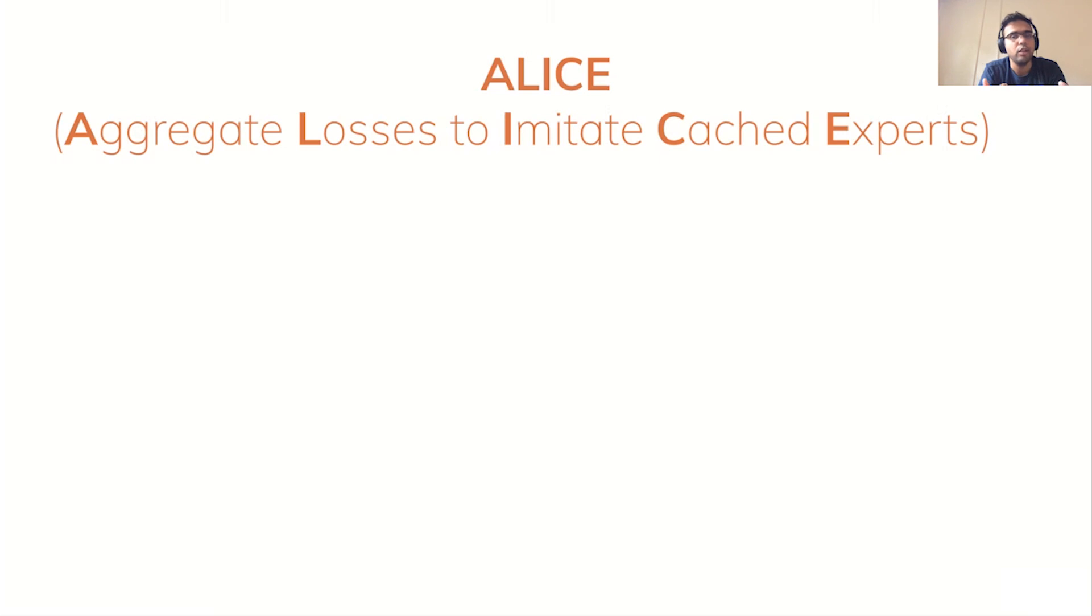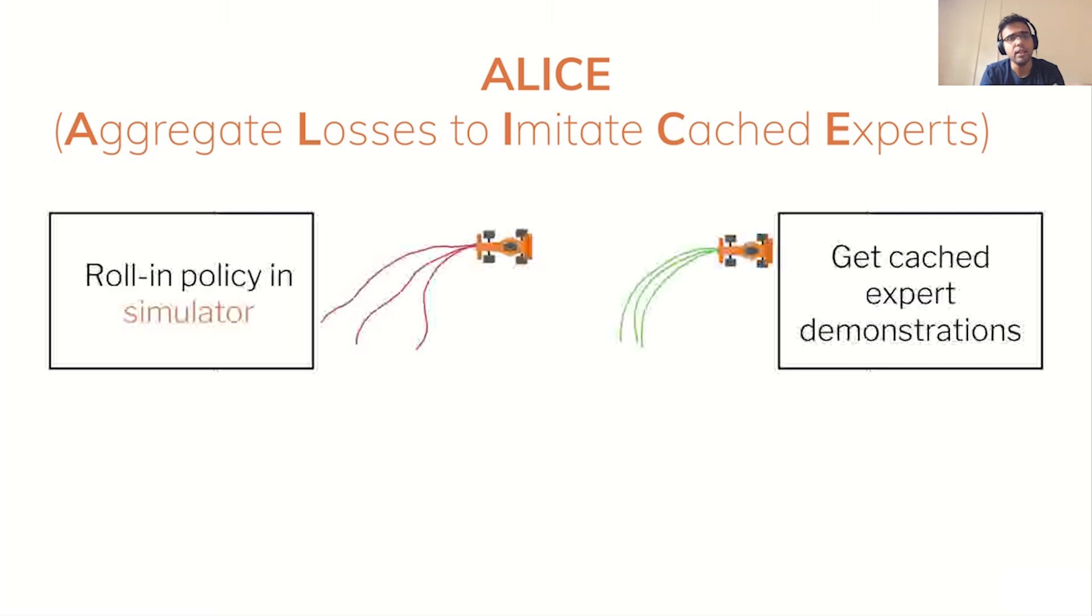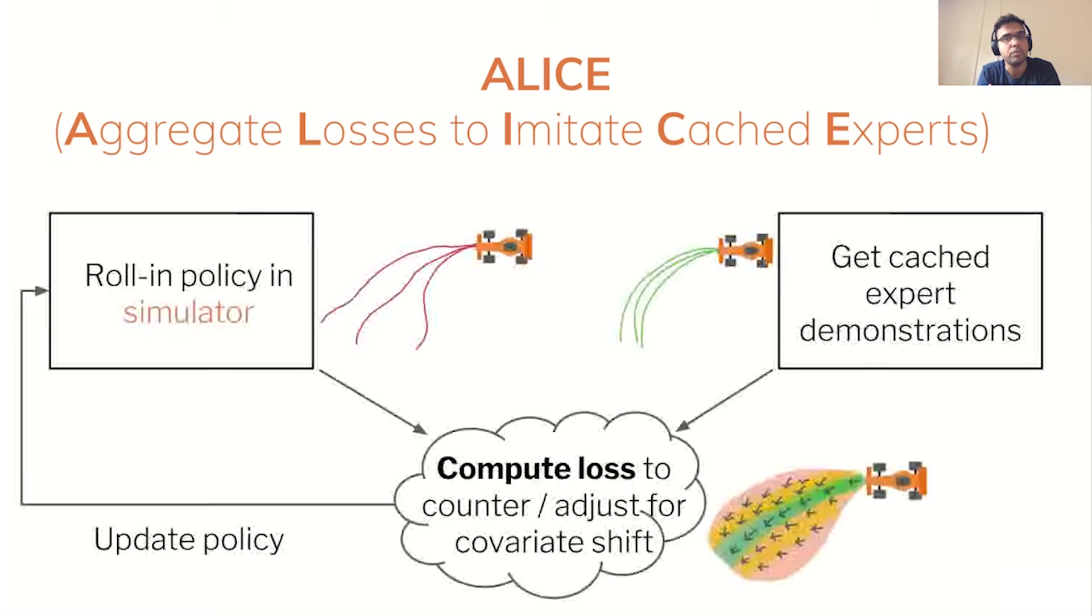So we call our framework ALICE, which stands for Aggregate Losses to Imitate a Cached Expert. Conceptually, ALICE interleaves two processes. ALICE uses a simulator and rolls in the learner to generate samples. It then uses these samples and samples from cached demonstration to construct a loss. This loss is set up in a way that it counters or adjusts for covariate shift between these distributions. The policy is then updated and the process repeats. Now, the key thing is that we are not using an interactive demonstrator. We are using cached demonstrations. The loss is where all the work happens. It's dynamically adjusting to new samples from the simulator as the learner keeps on changing.